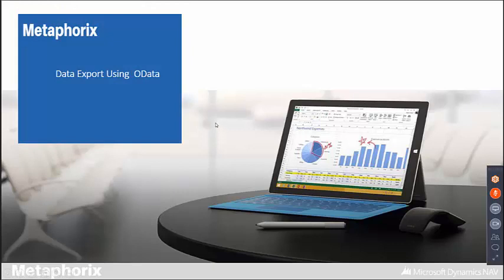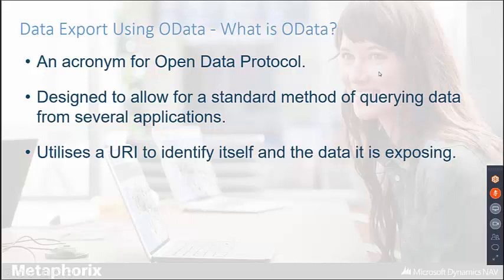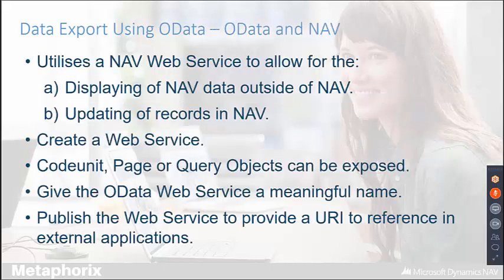The next data export method is OData. OData is an acronym for the Open Data Protocol — it's designed to provide a standard method by which data can be queried by several applications, including Excel, and utilizes a URL or URI defined by a web service in Navision once created. OData allows users to utilize a web service to display and manipulate NAV data outside of NAV itself, as well as the possibility to update records within Navision. To utilize OData connections, NAV users create a web service which can be linked to a code unit, page, or query.